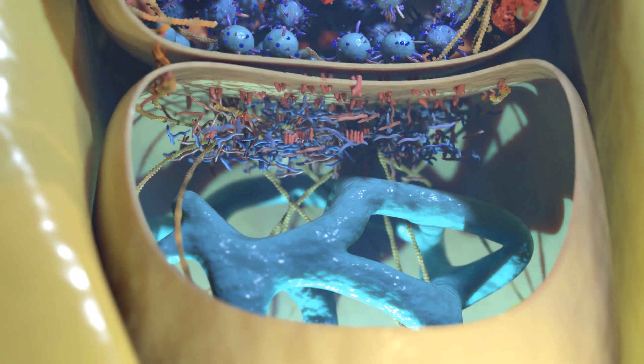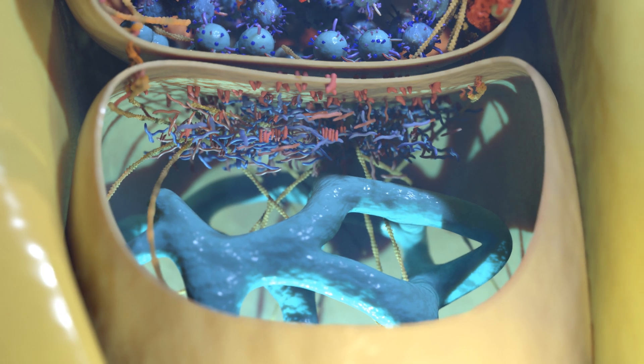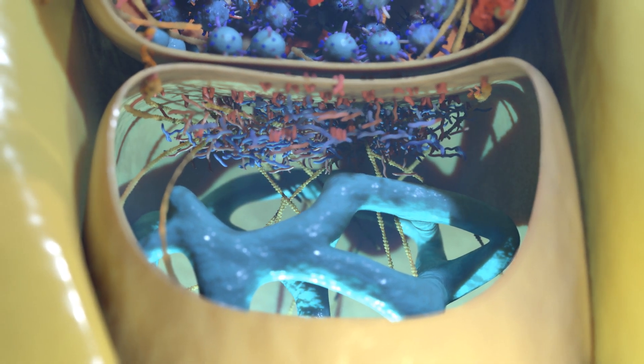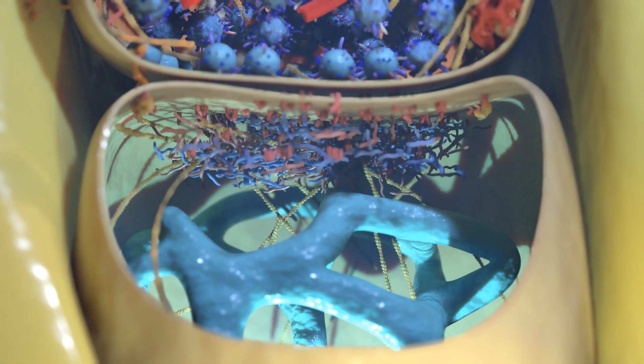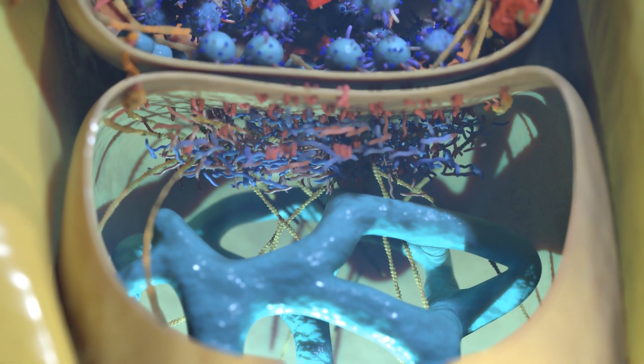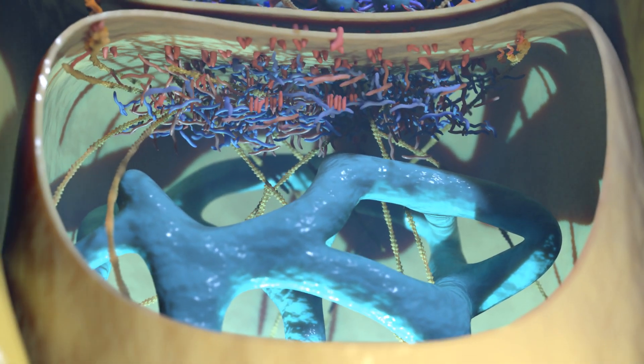It's a critical hub packed with receptors that bind to neurotransmitters released from the presynaptic terminal. We also find actin filaments here, contributing to the structural plasticity of the postsynaptic terminal.